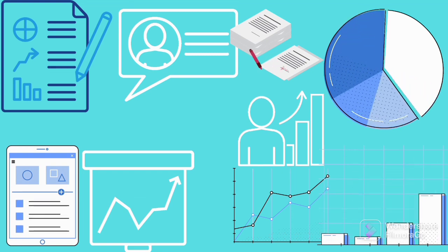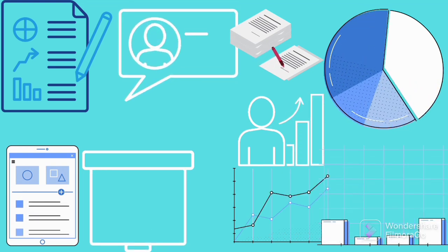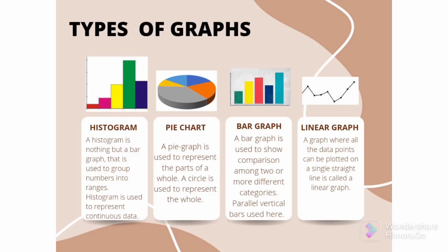In this video I will try to explain briefly the basic concepts of data handling. First let us know about the types of graphs. Histogram: a histogram is nothing but a bar graph that is used to group numbers into ranges.